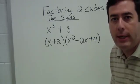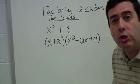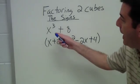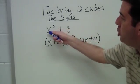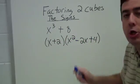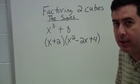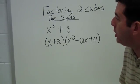Let's think about factoring two cubes. First, looking just at the signs. Here I've got a problem with two cubes. There are two terms with nothing common. That's the first thing I need to look at. And both parts are cubes.